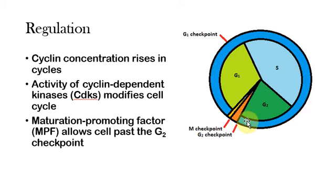They'll allow the cell through the checkpoint. Later on, as the cyclin concentration falls, the cyclin-dependent kinases will start being broken down and then that will be what puts the cell back into the cycle.